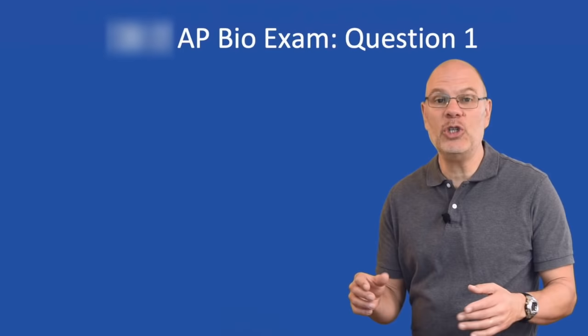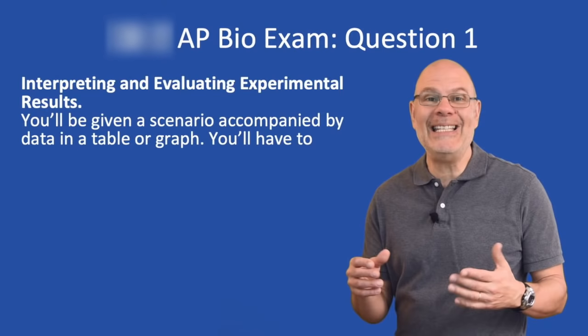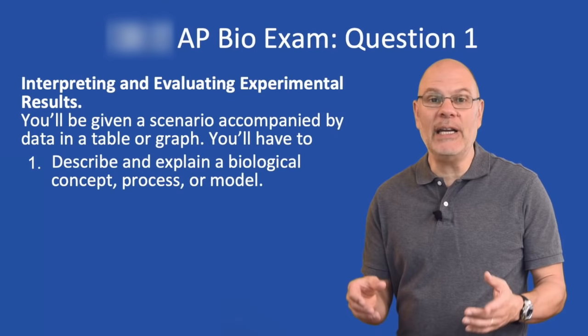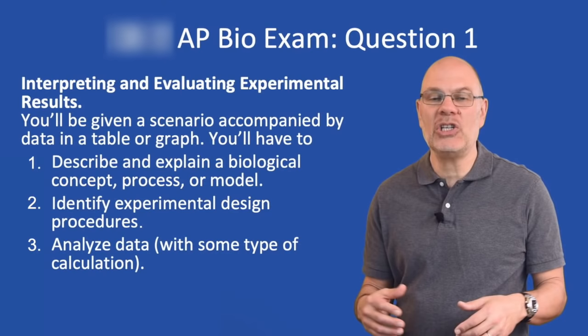Here's how the College Board describes what you'll have to do on question one of this year's AP Bio Exam. It involves interpreting and evaluating experimental results. You'll be given a scenario accompanied by data in a table or a graph. You'll have to: one, describe and explain a biological concept, process, or model; two, identify experimental design procedures; three, analyze data with some type of calculation; and four, make and justify a prediction.